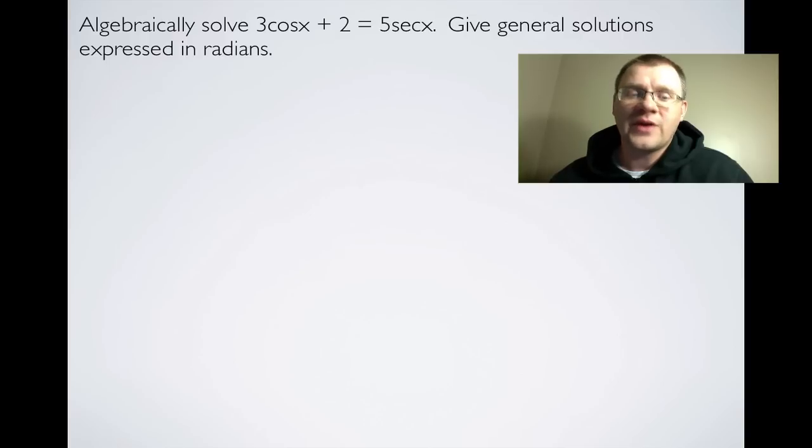So our last example says that we're going to algebraically solve 3cosx + 2 = 5secx and give general solutions expressed in radians again. Well, right off the bat, hopefully you recognize that secx is the reciprocal of cosine. So we can write this as 5/cosx.